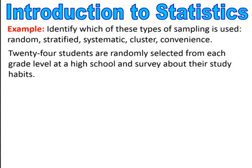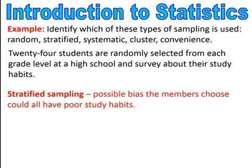This next example: 24 students are randomly selected from each grade level at a high school and surveyed about their study habits. Because we're taking pieces from each grade level — a sample from each group — that's stratified sampling. A possible bias could be that the members chosen could all have poor study habits. There are always biases or problems in statistical studies, and it's important to recognize them.